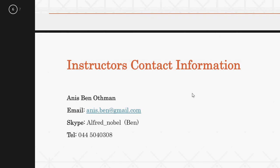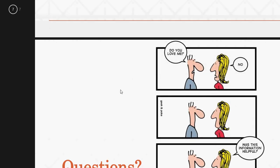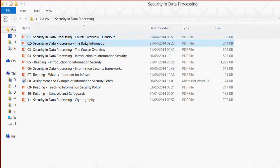Here are my contacts. My name is Anis Ben Ottman — you can call me Ben or Anis, both work. My email is anis.ben@gmail.com, my Skype is alfred_nobel, and my phone is 044 50 40 38. Currently I am on holiday abroad, so I cannot receive calls, but I will be answering all your emails. If you have a question, please write me an email or post it in the forum.